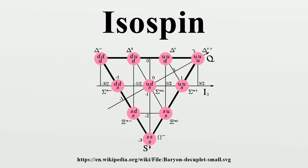This multiplet structure was combined with strangeness in Murray Gell-Mann's Eightfold Way, ultimately leading to the quark model and quantum chromodynamics. In the modern understanding of quantum chromodynamics, observation of the light baryons leads us to believe that some particles are so similar in terms of their strong interactions that they can be treated as different states of the same particle. This is because up and down quarks are very similar in mass and have the same strong interactions, and particles made of the same numbers of up and down quarks have similar masses and group together.